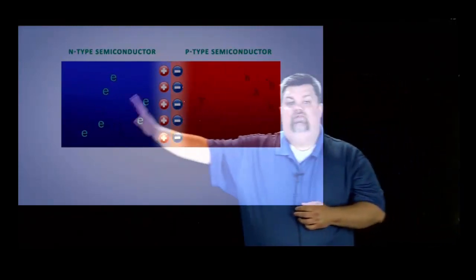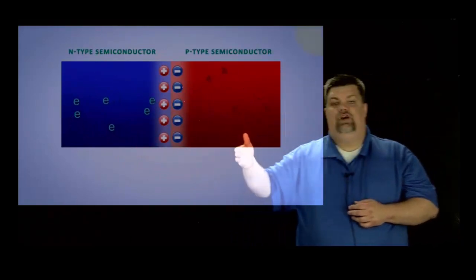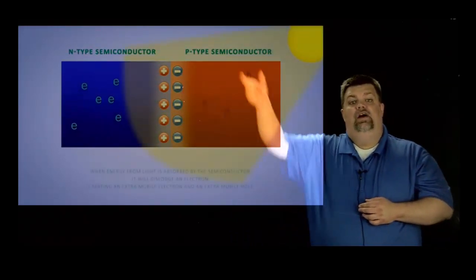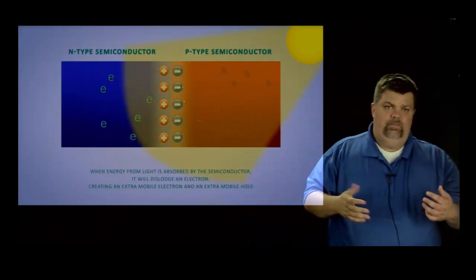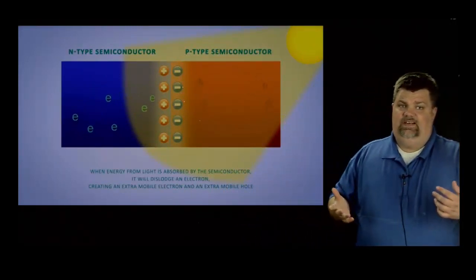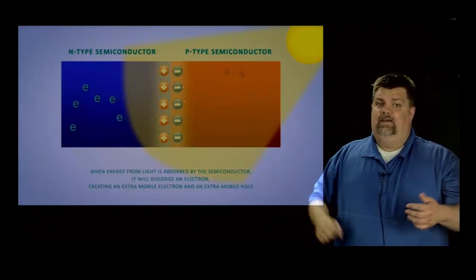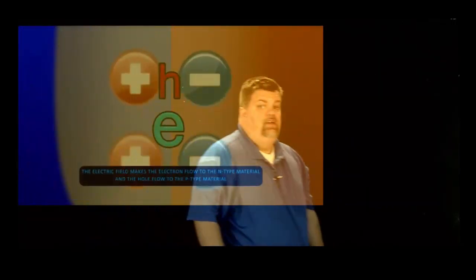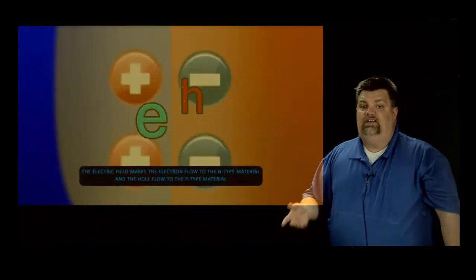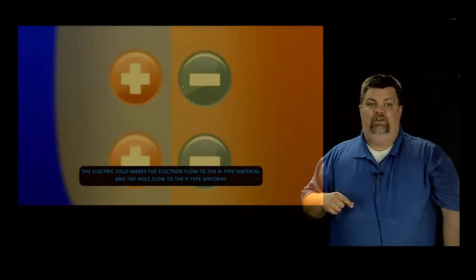When you have a positive charge on one side of the junction and a negative charge on the other side, you create what we call an electric field. The electric field, the simplest way to explain it, is the electric field is like a fence that eventually stops the holes from going this way and it stops the electrons from going this way. So now we end up with holes and electrons stopped right there at that electric field.